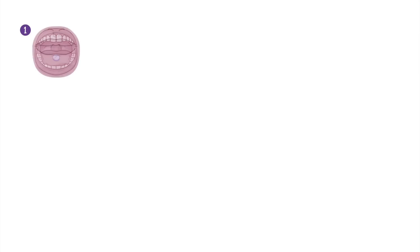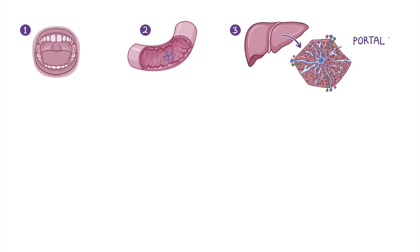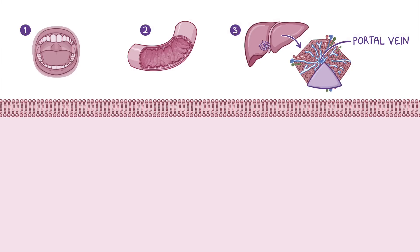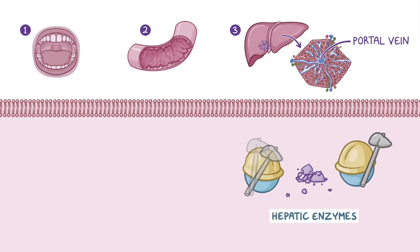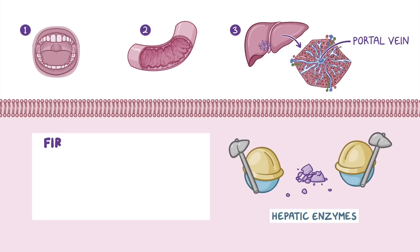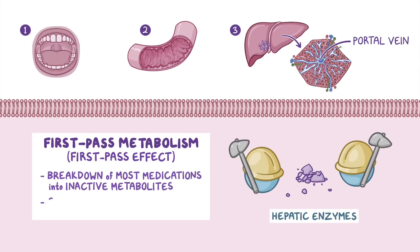After a medication is taken by mouth, it gets absorbed through the walls of the small intestine and transported into the liver via the portal vein. Once in the liver, hepatic enzymes work on the medication to metabolize it. This process is known as first-pass metabolism or first-pass effect, and is responsible for breaking down most medications into their inactive metabolites, as well as converting certain pro-drugs into their active metabolites before entering the general circulation.